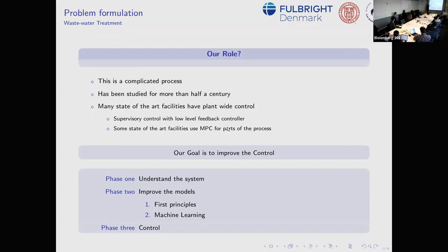Our goal is to go from the current state to fully automated optimization on the plant-wide scale. Our plan: phase one is to understand the system; phase two is to improve the models — looking at first-principles models, activated sludge models, and using machine learning to improve them; and then phase three is control.